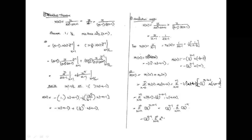Fourth method: convolution method. Given X(z) = z/[(z-1)(2z-1)]. Split into two functions: X₁(z) = z/(z-1) and X₂(z) = 1/(2z-1) = (1/2)·[1/(z-1/2)].